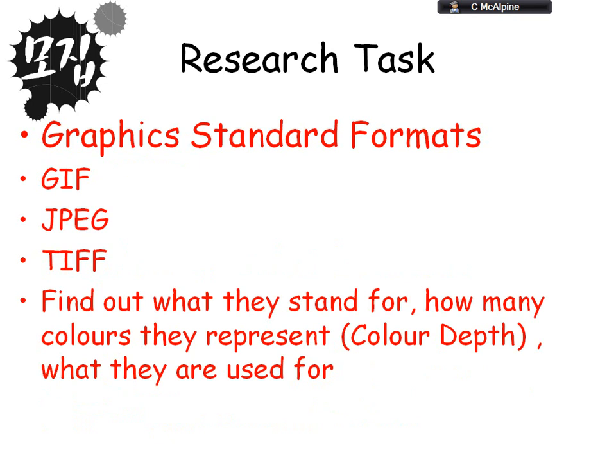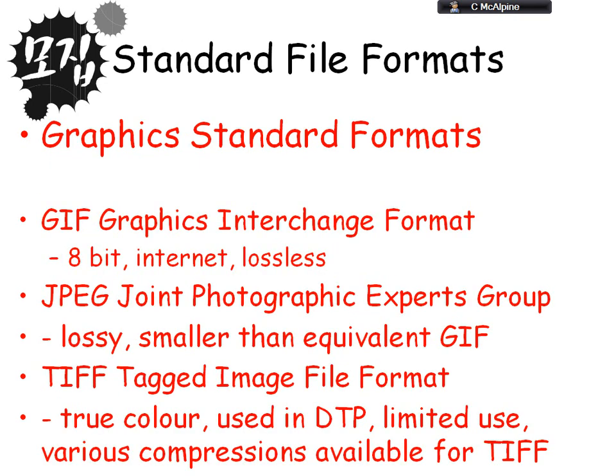GIFs are 8-bit, generally used on the internet, and use lossless compression. JPEGs use lossy compression, allow up to 24-bit true color images, and because they're lossy can have smaller file sizes than an equivalent GIF. TIFFs can be an uncompressed raw format that stores everything, but also support different compression types. TIFFs can store up to true color and are capable of storing a transparent color, which lets the color from behind appear through in advanced image editing software.